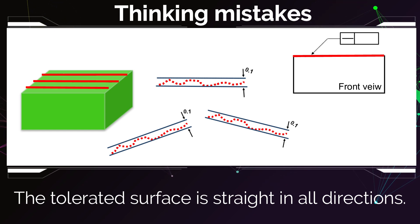only those that are parallel to the line that you tolerated. If you want to control the straightness in any other direction, in this case the direction perpendicular to the screen, then you will have to put another tolerance, another straightness tolerance pointing at this line and say this has to be straight.